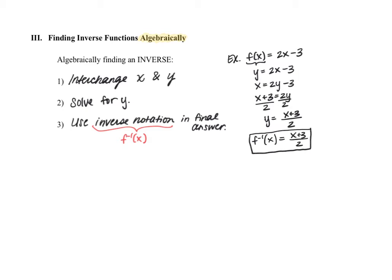I want to start with this example so you can really see what the inverse function is doing to the original function. Imagine for this original function, if I asked you to plug in a value for x — you would substitute that number in, and the first thing you would do is multiply that number by 2, and then subtract 3 from it. Now look at the inverse function: the first thing you would do is add 3, and then divide that number by 2.